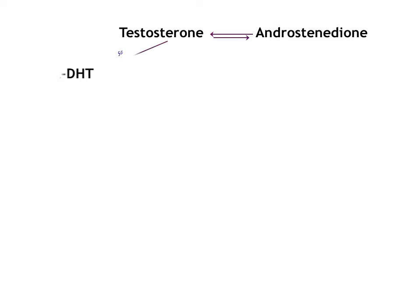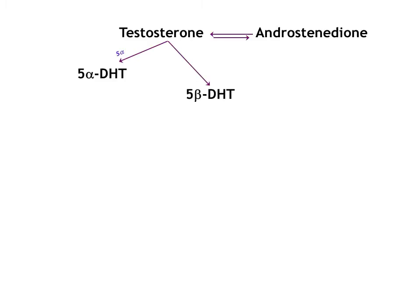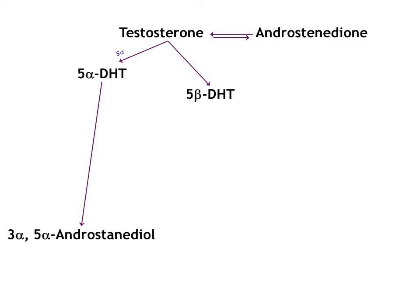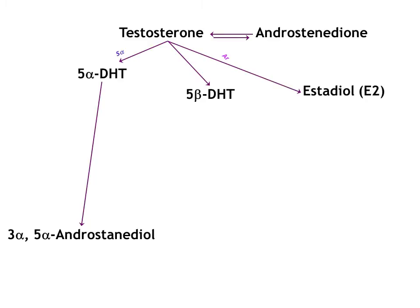Testosterone, via 5-alpha reductase, is converted to 5-alpha DHT. 5-beta DHT can also be produced. And from 5-alpha DHT we get 3-alpha 5-alpha androstenediol.